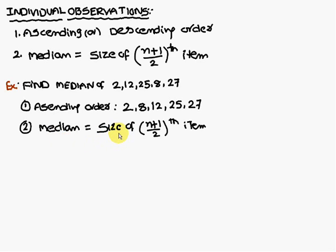Next, median formula is size of n plus 1 by 2th item. What is n here? The number of items. 1, 2, 3, 4 and 5. Therefore, n is 5.